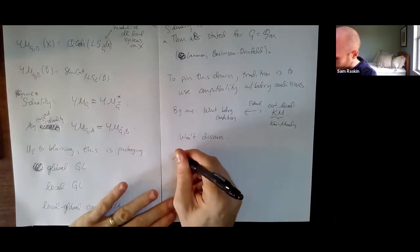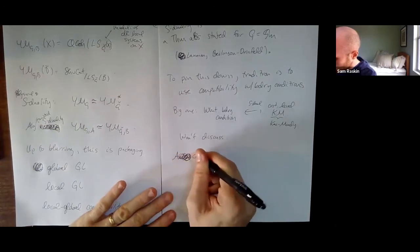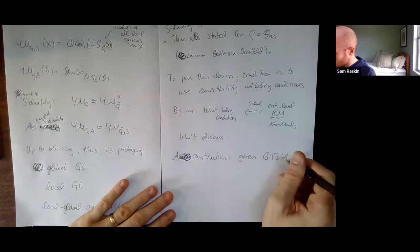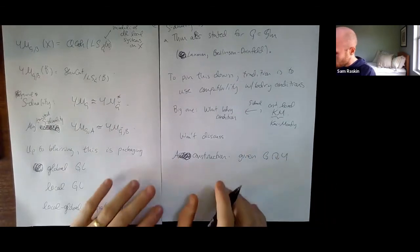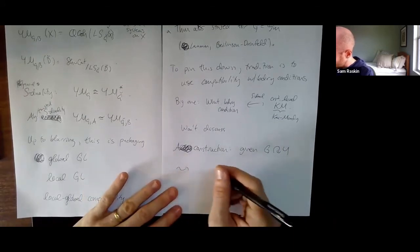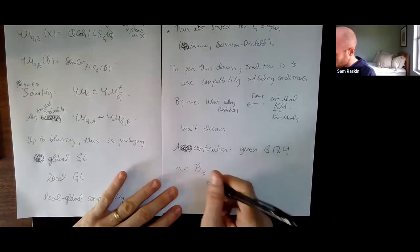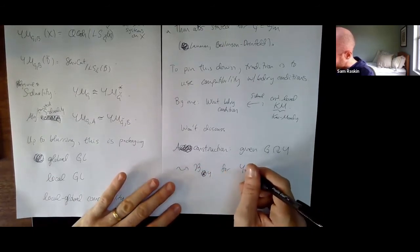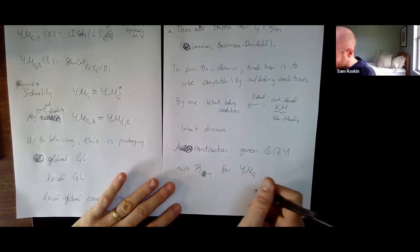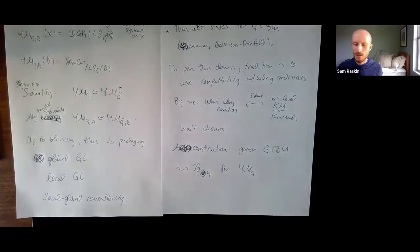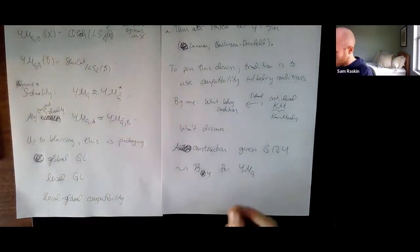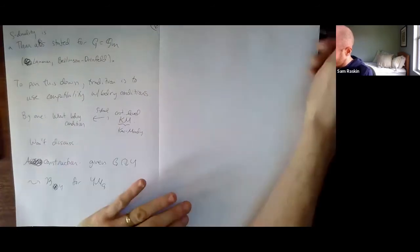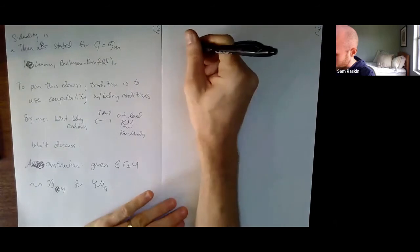Here's another construction. If you're given G acting on some variety or stack Y, there's a corresponding boundary condition B sub Y for Yang-Mills sub G. This is compatible with the 3D N=4 inside the 4D N=4 supersymmetry. Classically, if you ignore quantum things, B sub Y really depends on the Hamiltonian G-space — the cotangent bundle of Y with its natural map down to g-star.